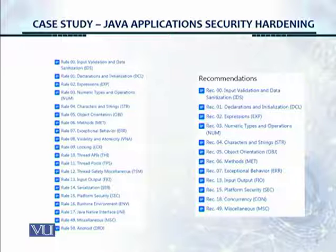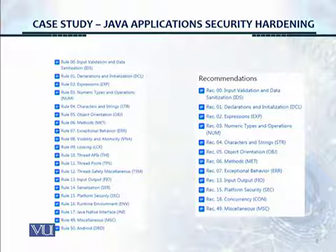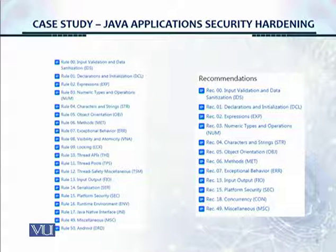If you go to the Software Engineering Institute webpage for Java security, for the URL shown on the first slide, this is what the layout looks like. These are all hyperlinks which you can click on. There are about 18 or 19 rules which you can see on the left side, and then there are about 10 or 12 recommendations which you can see on the right side.